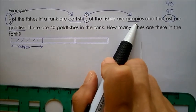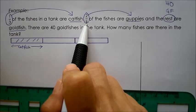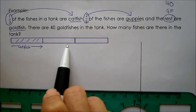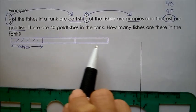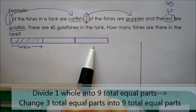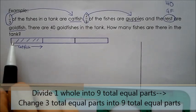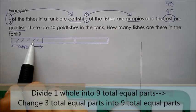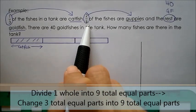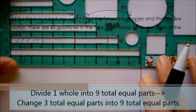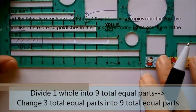Now, two-ninth of the fishes are guppies. Looking at the fraction, the denominator here is nine — it is no longer three. But my model shows three total equal parts, so I have to divide three equal parts to become nine equal parts. I can divide each one equal part into three small equal parts, which gives me a total of nine equal parts. I'm going to use my model stencil to help me so that it is equally divided.